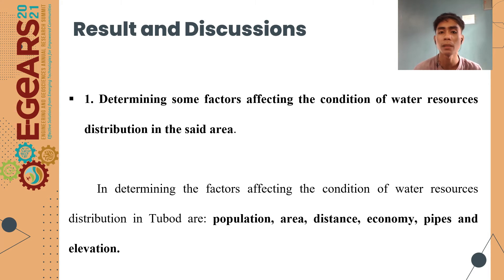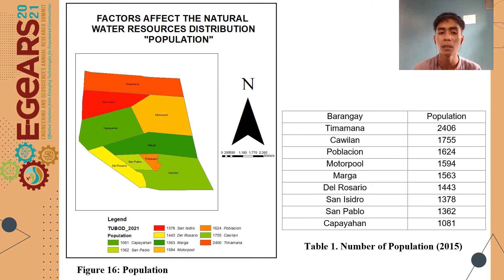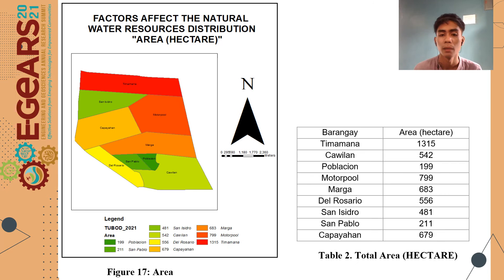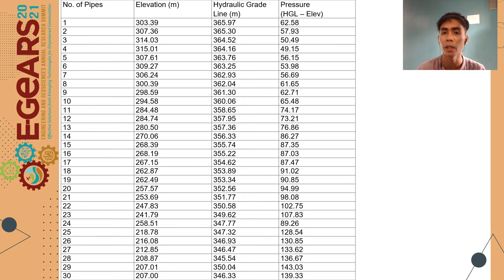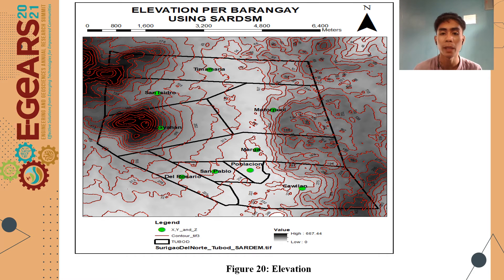Results and Discussion. For determining factors affecting the condition of water sources distribution in the said area, the researchers considered six factors: population, area, distance, economy, pipes, and elevation. The slides show Figure 16, the population, and Table 1, the number of population, with data obtained from the PSA. This slide shows the map for the area and the total area in hectares per barangay. The distance table computes the distance data from each barangay to the reservoir. The number of pipes shows how each barangay connects to the main source down to the reservoir, then distributed to the specific barangay. Elevation was obtained using SRTM DEM to determine the elevation for each barangay.